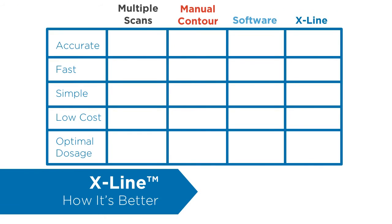The multiple scans approach can provide good composite images only if the patient does not shift, but takes significantly longer, can be quite complicated, costs more, and exposes the patient to extra scan radiation. Manual contouring isn't very accurate, takes more of the physicist's time, relies on the expertise of the physicist, and results in incorrect radiation dose planning. Software doesn't fare much better — although it is much faster than other methods, its inaccuracy compromises radiation dose planning.